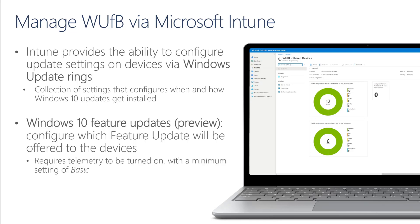The other policy type is called Windows 10 Feature Updates. Note that this functionality is still in preview, but it allows us to configure which feature update will be offered to devices. Devices update to the version specified in the policy, and if a device already runs a later version of Windows, it will remain at that specific version. Devices won't install a new Windows version until you modify or remove the Windows 10 Feature Updates policy. Note that to leverage Windows 10 Feature Updates, telemetry is a requirement and must be set with a minimum value of Basic.